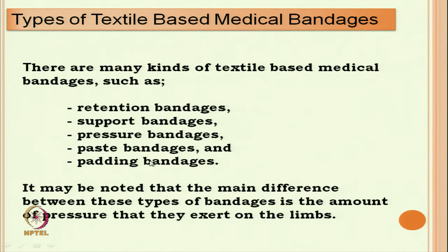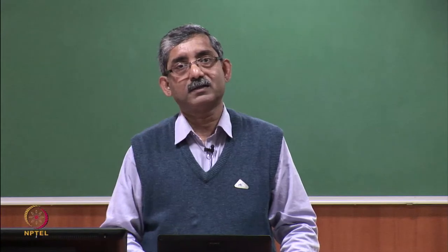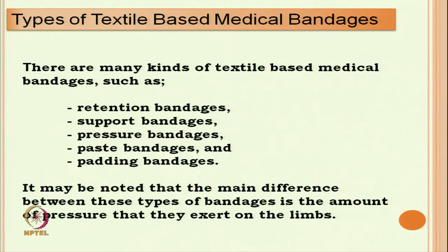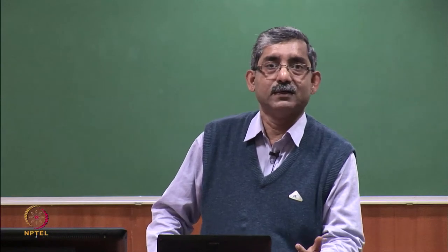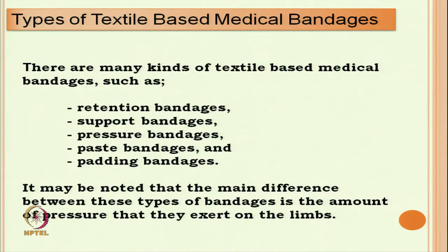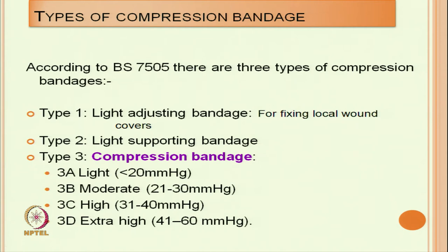One important thing to note is that the main difference between these types of bandages is the amount of pressure they exert on our body. Different bandages impart different levels of pressure. The pressure bandage or compression bandage's main function is to impart different levels of pressure depending on our requirement. Compression bandages are divided into different categories depending on the level of pressure they impart on our body.